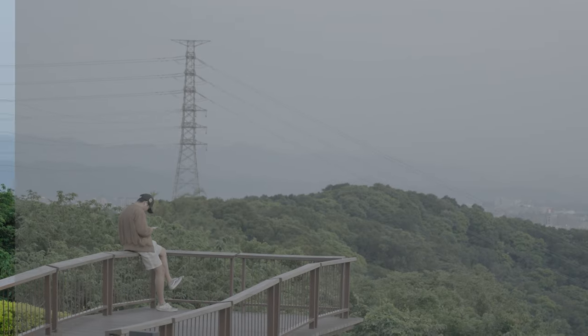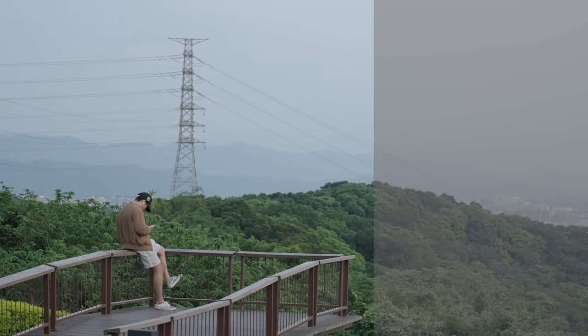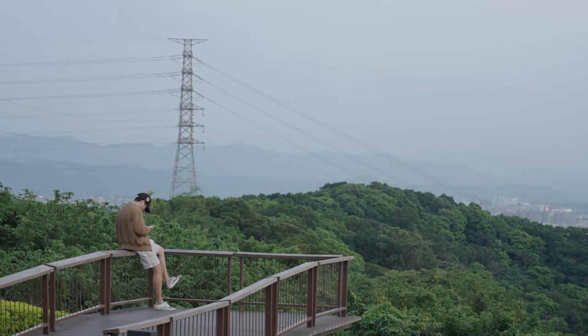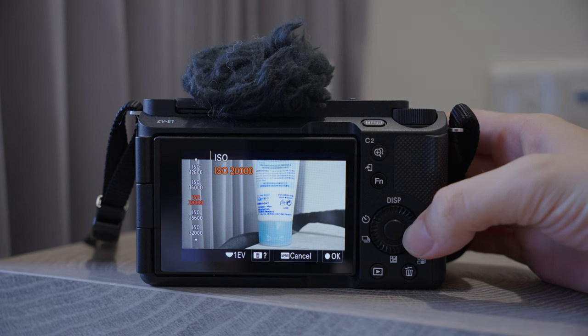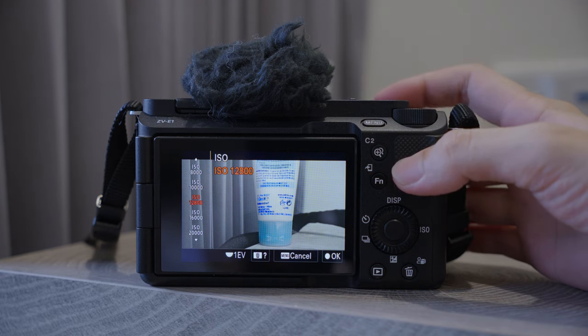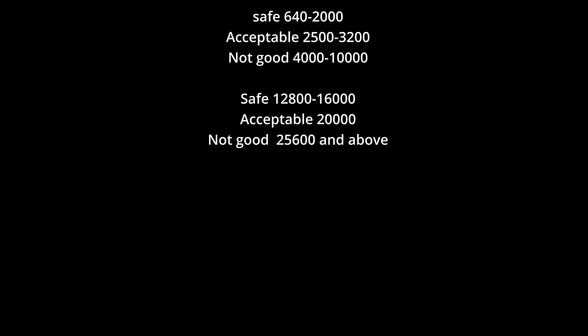Before we move on to the color grading section, here's a question you might have when shooting in S-Log3: what if ISO 640 is not enough and 12800 is too bright for this scenario? Well, even though I mentioned it is better to stick to the base ISO, sometimes a little bit higher than it will still deliver pretty good results. These are the ISO safe zones according to my experience, but of course this is just my opinion — it really depends on your lighting situation and the purpose of the video.